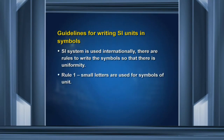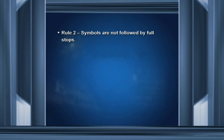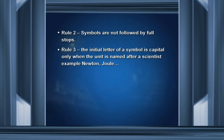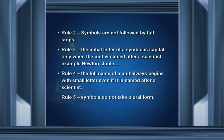Rule number one: small letters are used for symbols of units — like kg and not capital K-G, meter as small m and not capital M. Rule number two: symbols are not allowed to be followed by full stops. Rule number three: the initial letter of a symbol is capital only when the unit is named after a scientist — for example, Newton or Joule. Rule number four: the full name of a unit always begins with a small letter even if it is named after a scientist — so force is equal to 50 newton with small n, or else you put capital N to represent the newton. Rule number five: symbols do not take plural form — so you cannot say centimeters or meters.